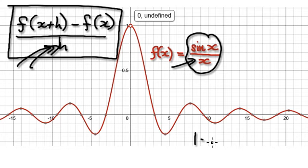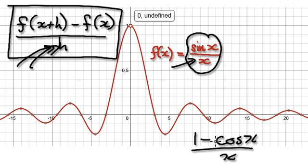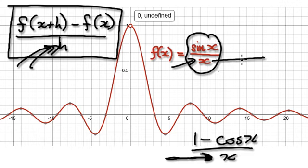Another example is (1 minus cos(x)) over x. There are many instances where we want x to head towards zero, but it's meaningless dead on zero. Similarly, there are many instances where we want h here to head towards zero, but dead on zero the whole expression is meaningless.